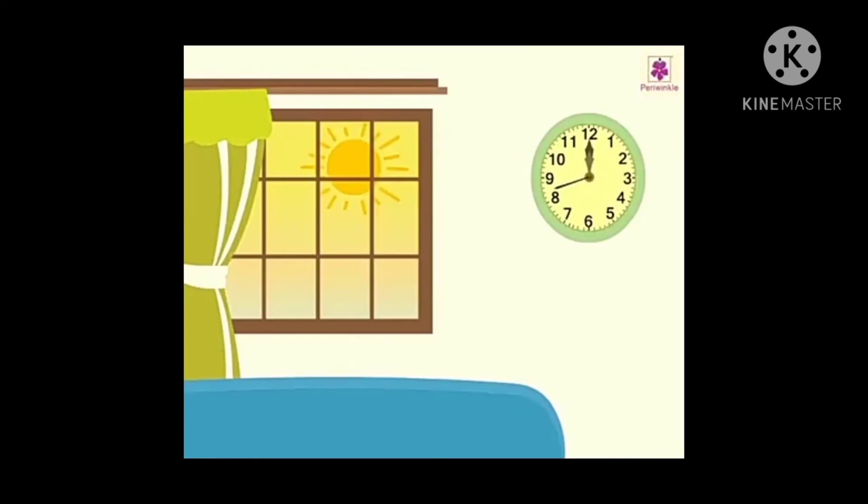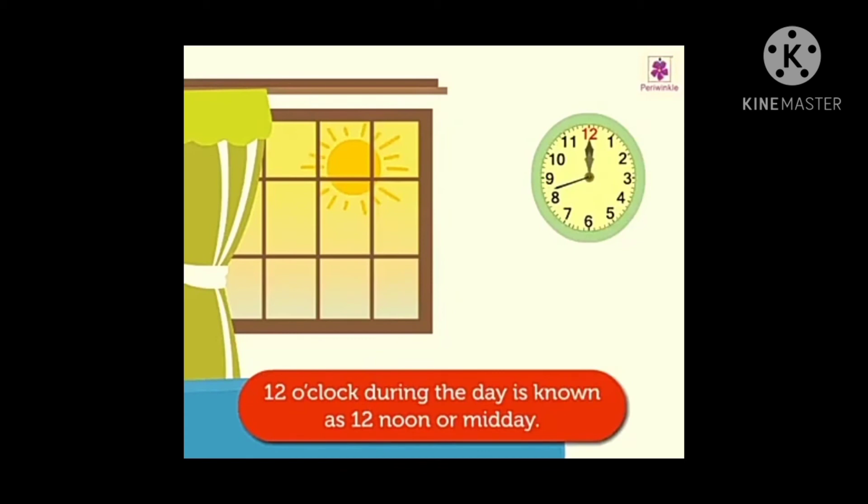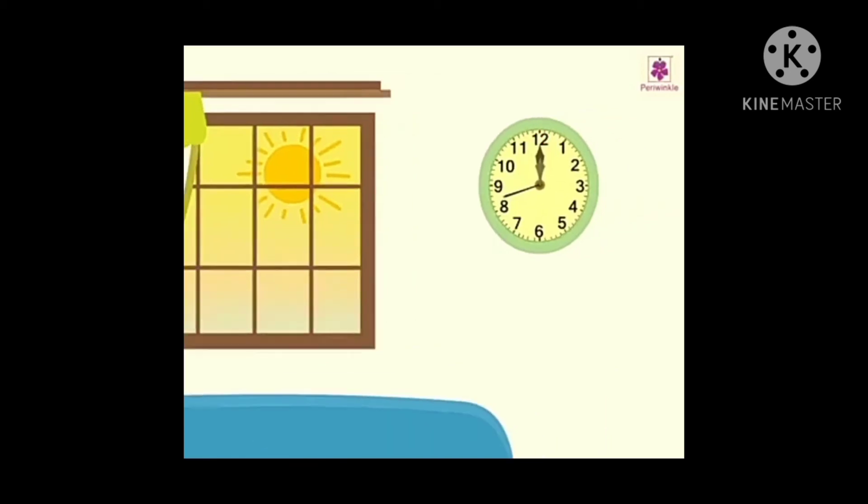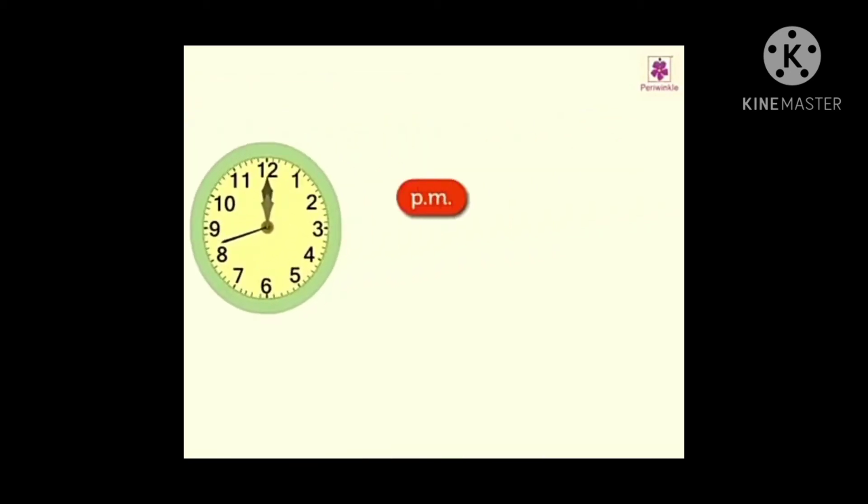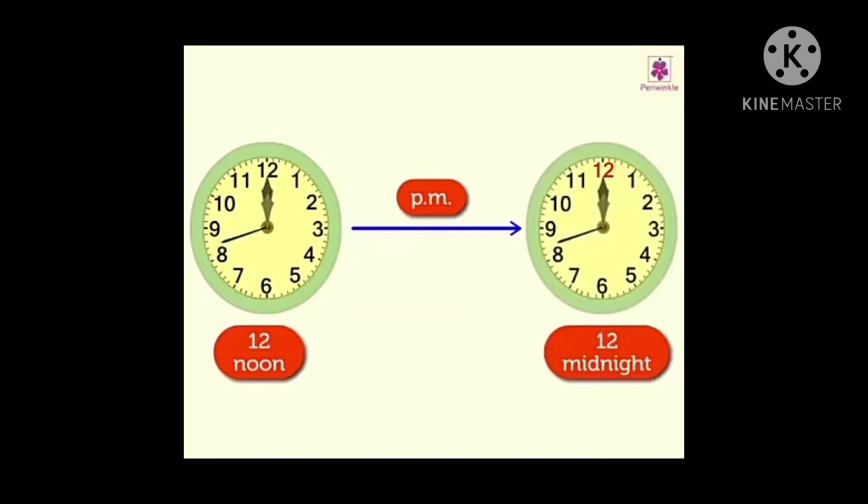Now what do we mean by noon? 12 o'clock during the day is known as 12 noon or midday. The time PM starts right after 12 noon and ends just before 12 midnight. Here the term PM stands for post meridiem in Latin and means afternoon.